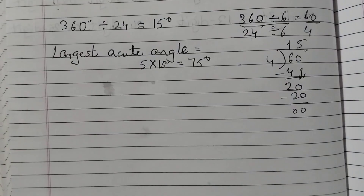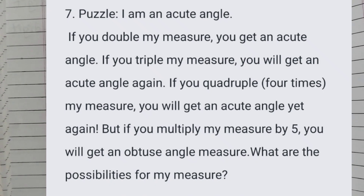Hope this is clear. The next question is a puzzle: I am an acute angle. If you double my measure you get an acute angle. If you triple my measure you get an acute angle again. If you quadruple — that is, 4 times — my measure, you get an acute angle yet again. But if you multiply my measure by 5, you get an obtuse angle. What are the possibilities for my measure?